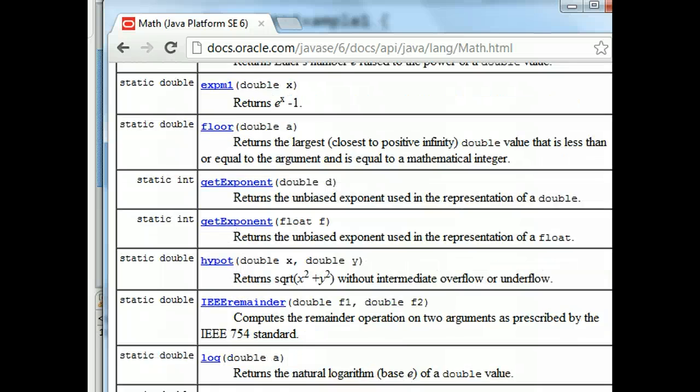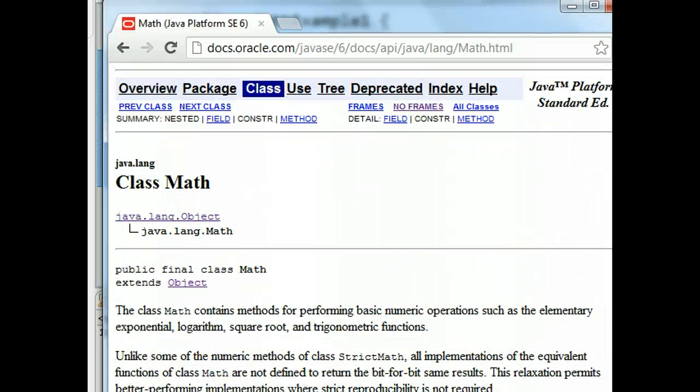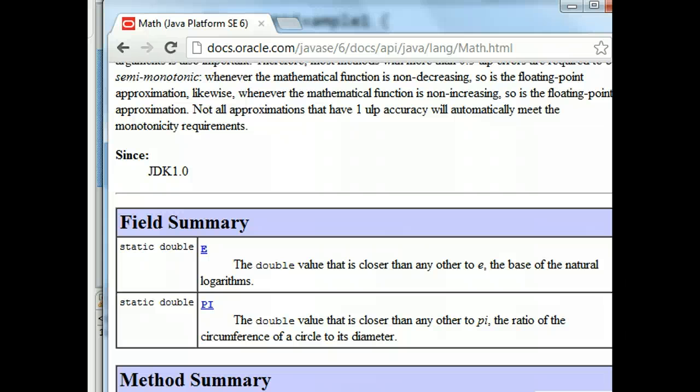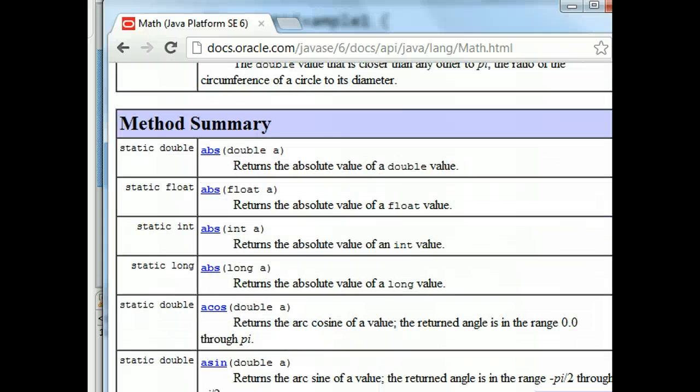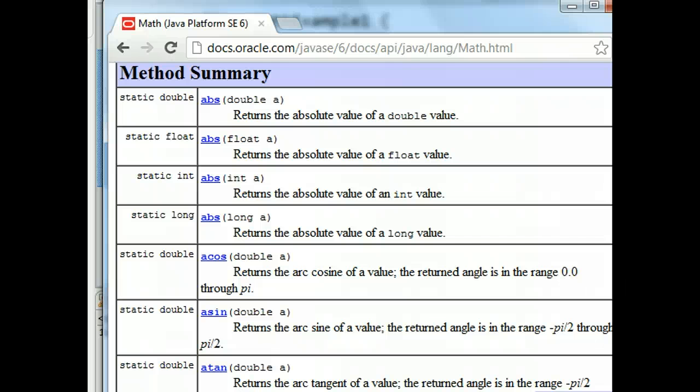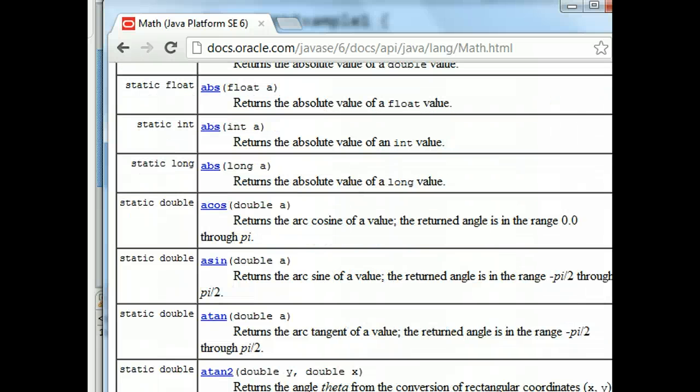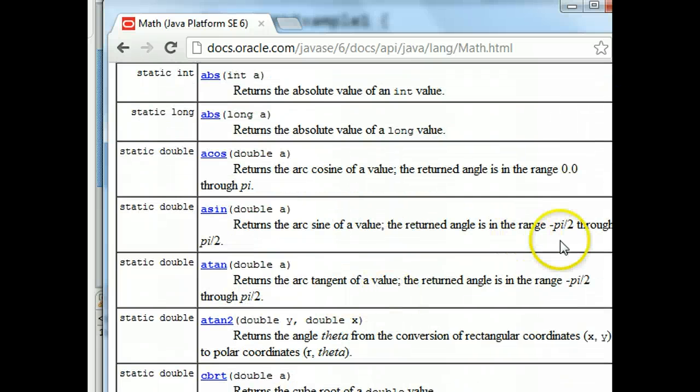So remember, a class contains fields, which we haven't talked about yet, and methods. And methods are chunks of code that do something. To use that method, we look at the following. We start by looking for the name of the method.